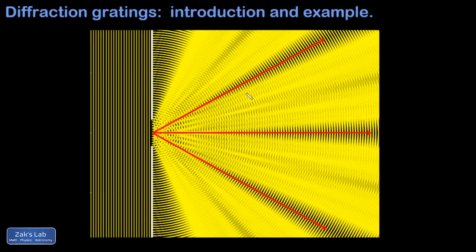A diffraction grating is a film with effectively thousands of slits in it. As light passes through these gaps, each gap acts as a source of circular wavelets — this is really an application of Huygens' principle. These wavelets interfere with each other, and for whatever wavelength of light we're using, we'll see constructive interference at different angles to the screen.